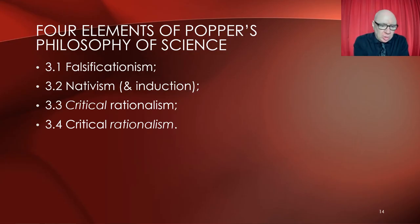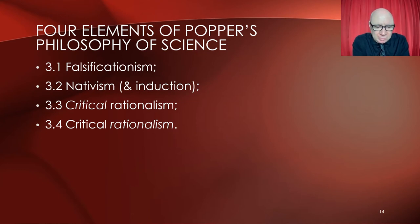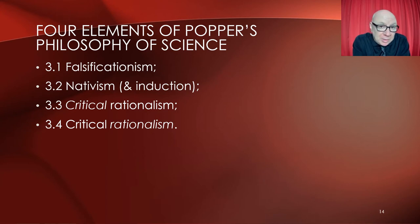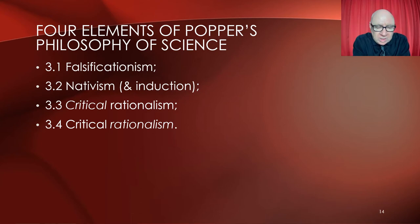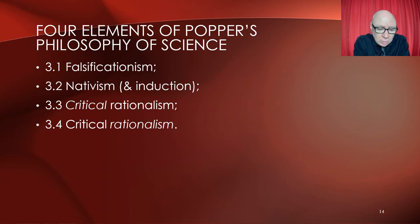Let's now look in more detail at the philosophy of science of Karl Popper. He defends a critical rationalism. I'd like to explain four important elements of Popper's philosophy of science. The first is falsificationism, which has several elements. All rationalists do in some way accept nativism — the idea that we are born with at least some knowledge. Discussing this also leads us to Popper's ideas on induction. He is a critical rationalist, so we need to see what is critical about his rationalism and that it indeed is a rationalism. First: falsificationism.